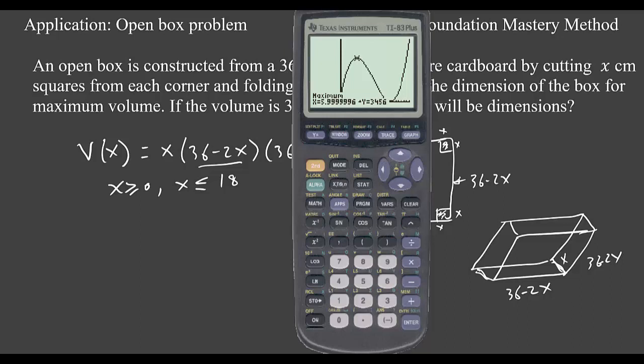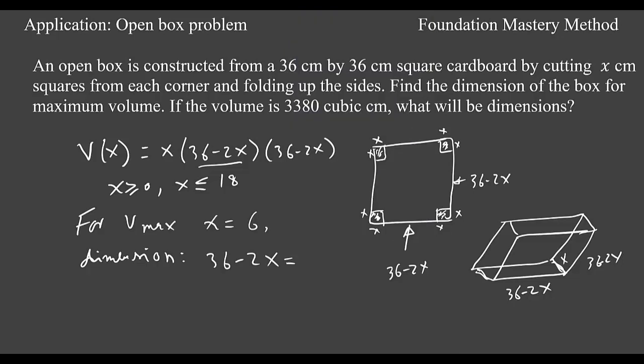So now this one is giving you x is 6 and volume is actually this one. So we say that x is 6 rounded to two decimal places. When we are looking for dimension, first I need to see the length 36 minus 2x, which is 36 minus 2 times 6. So you get 36 minus 12 which is 24. So your dimension will be 24 cm by 24 cm by 6 cm.